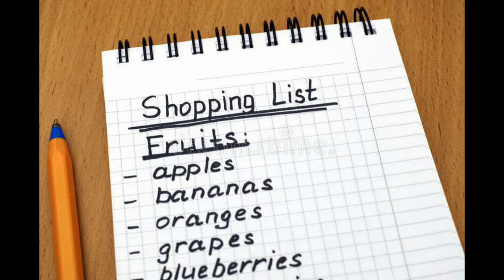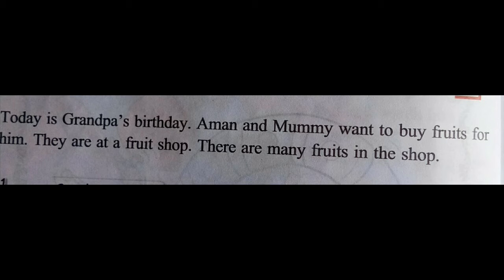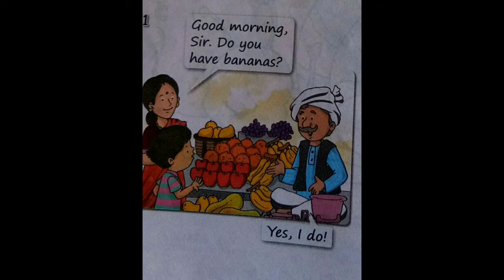After that, we read the lesson. 'Today is grandpa's birthday. Amman and mummy want to buy fruits for him. They are at a fruit shop. There are many fruits in the shop.' We also read the first point — 'Good morning sir, do you have bananas?' Amman's mother is asking the shopkeeper, and the shopkeeper says, 'Yes, I do.'